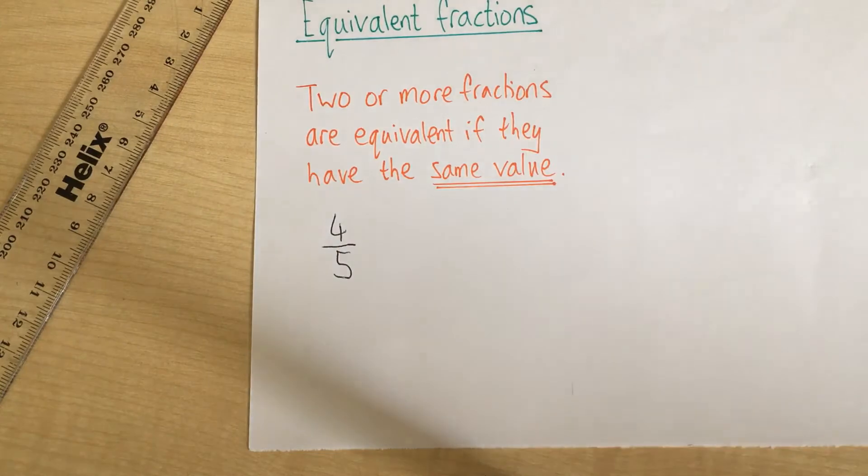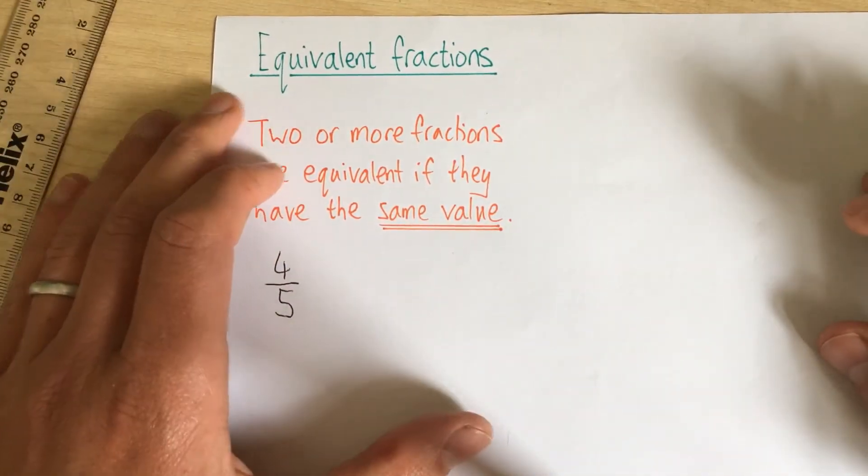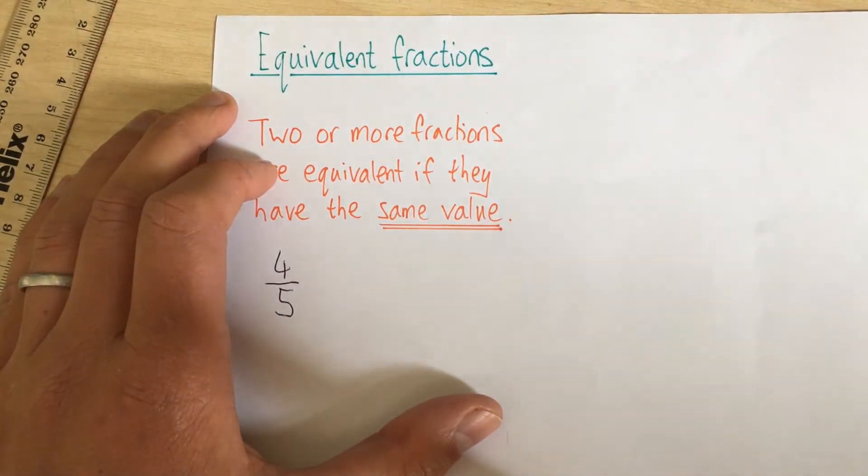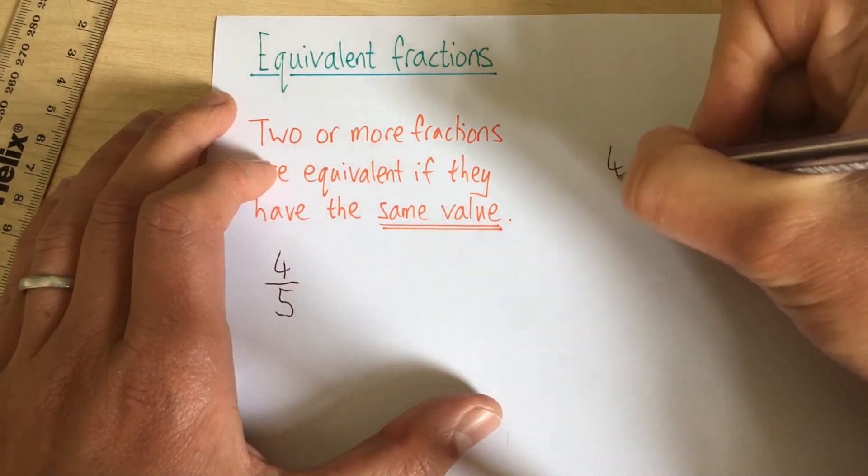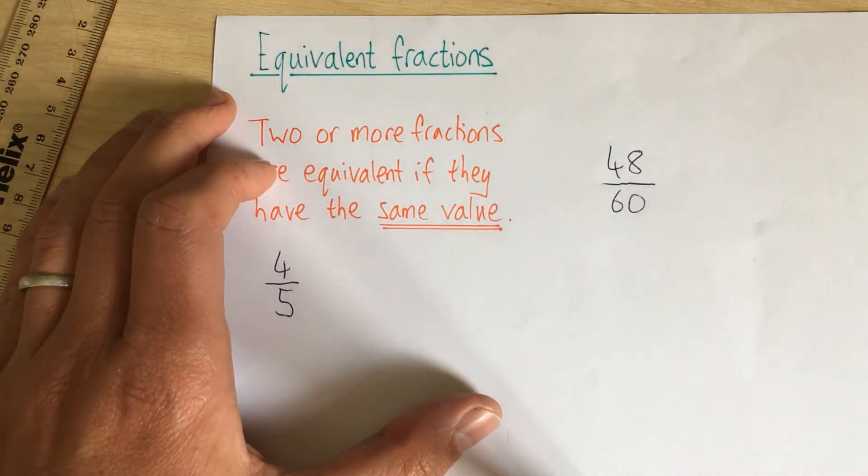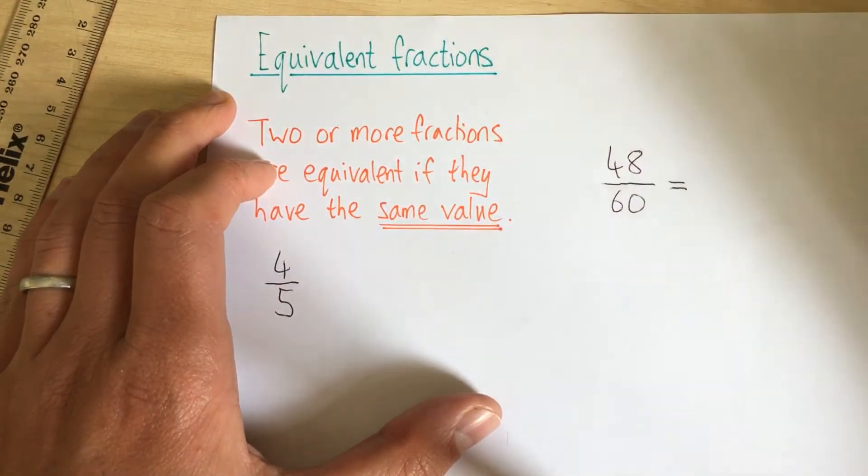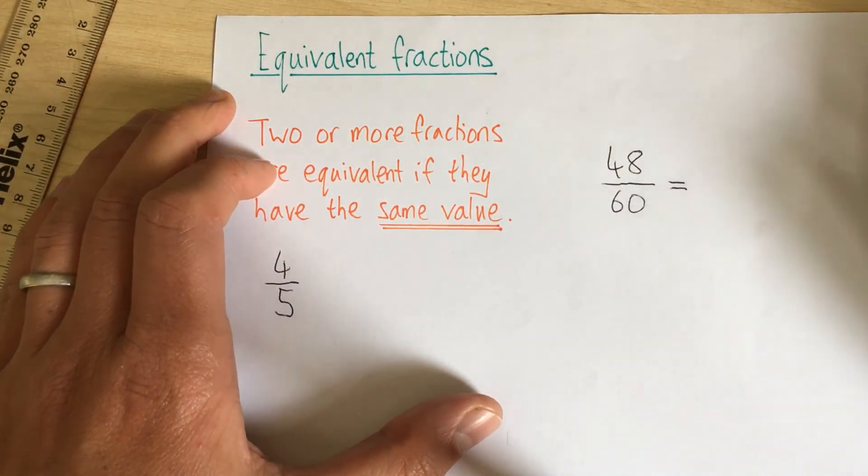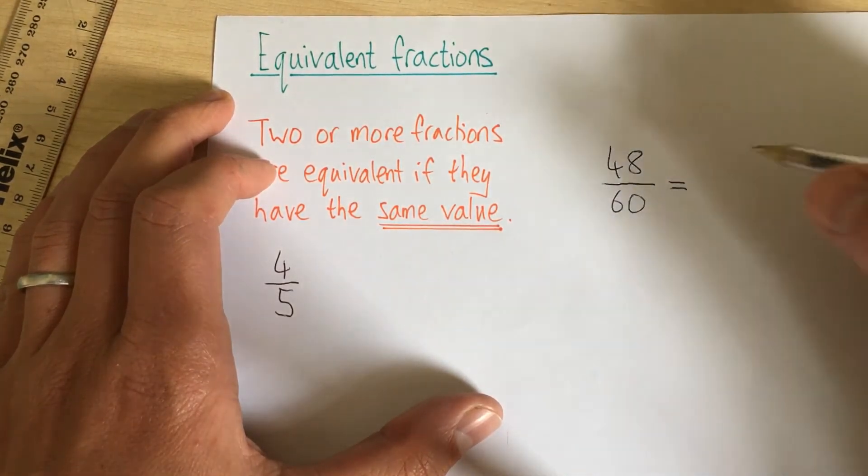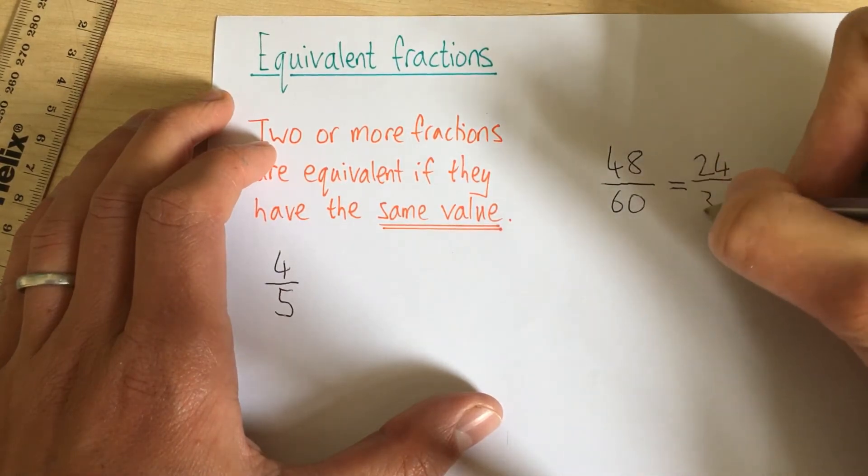Jump back to this page. This is really useful when we want to reduce a fraction. So we might have, for example, 48 over 60. That's quite large numbers to work with, but we could reduce this using equivalent fractions. For example, two is a factor of 48 and a factor of 60. So it's equivalent to 24 over 30.